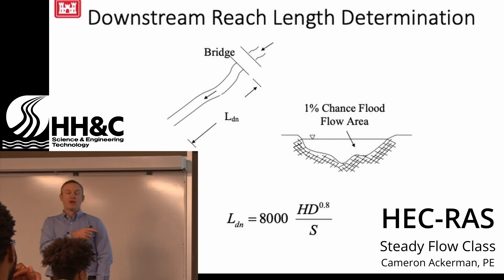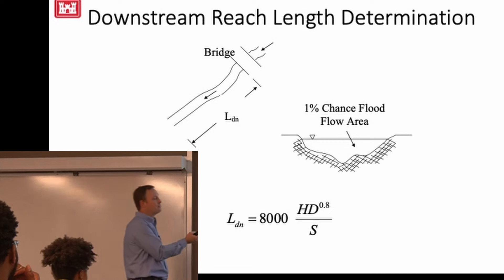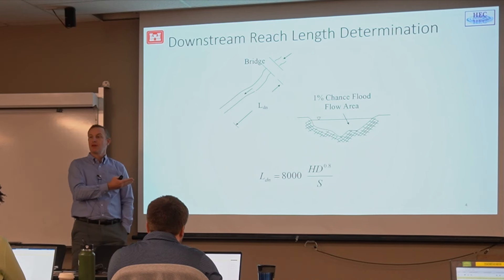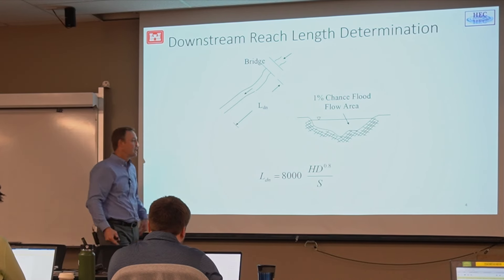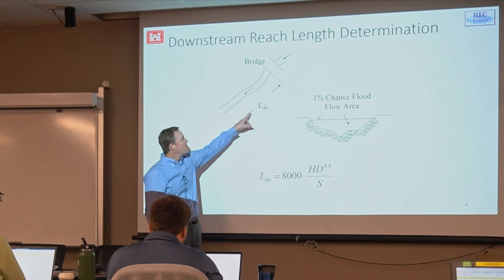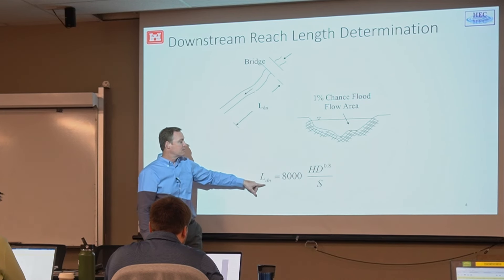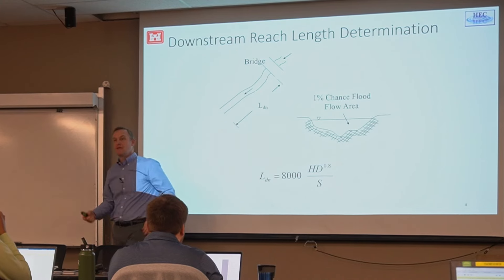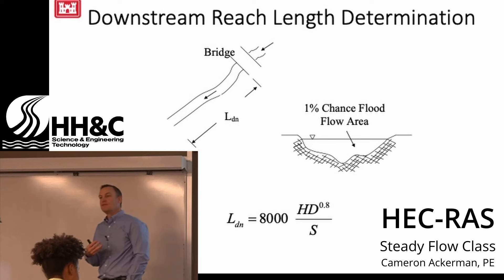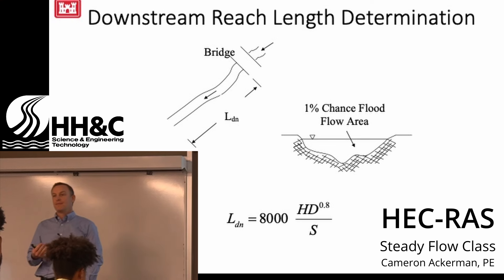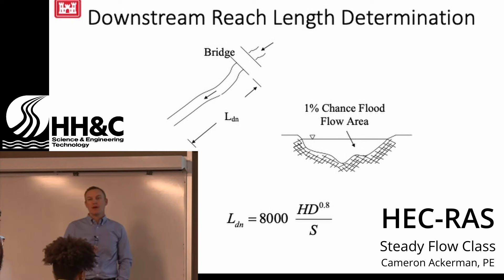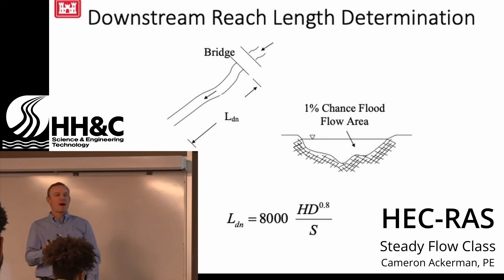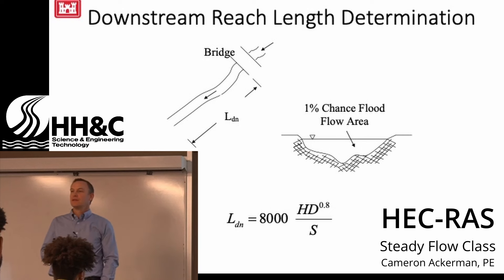Here's an equation to estimate how far downstream you need to go: the downstream length is approximately 8,000 times the hydraulic depth to the 0.8 power, divided by the slope in feet per mile. For most river systems, this works out to about one to two miles downstream of your project area.